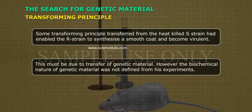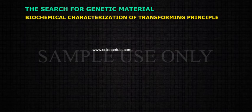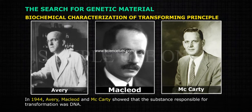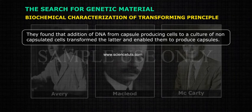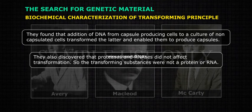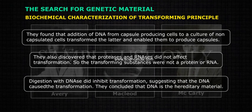However, the biochemical nature of the genetic material was not defined from Griffith's experiments. Biochemical Characterization of Transforming Principle: In 1944, Avery, McLeod, and McCarty showed that the substance responsible for transformation was DNA. They found that addition of DNA from capsule-producing cells to a culture of non-capsulated cells transformed the latter, enabling them to produce capsules. They also discovered that proteases and RNase did not affect transformation, so the transforming substance was not a protein or RNA. Treatment with DNase did inhibit transformation, suggesting that DNA caused the transformation. They concluded that DNA is the hereditary material.